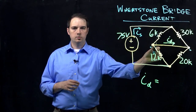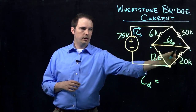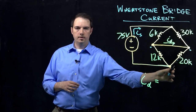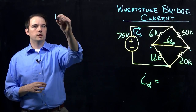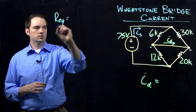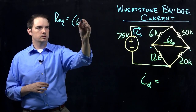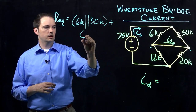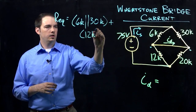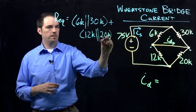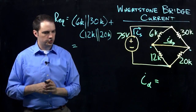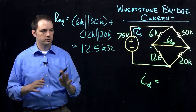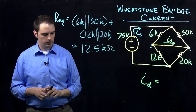We can find the equivalent resistance for this network. We see that we have a 6kΩ resistor in parallel with a 30kΩ — tied on either end — and that combination is then in series with the parallel combination of the 12kΩ and the 20kΩ. So the total equivalent resistance is the 6k in parallel with 30k, in series with the parallel combination of 12k with 20k, which comes out to 12.5 kilohms as the total equivalent resistance.